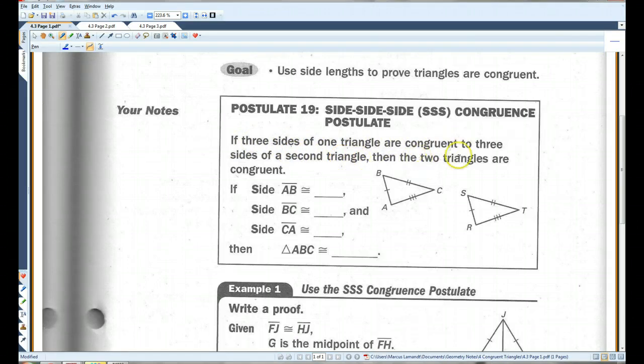You don't have to go about and prove all three sides and all three angles are congruent. If you have all three sides, automatically you know the sides and the angles are congruent.